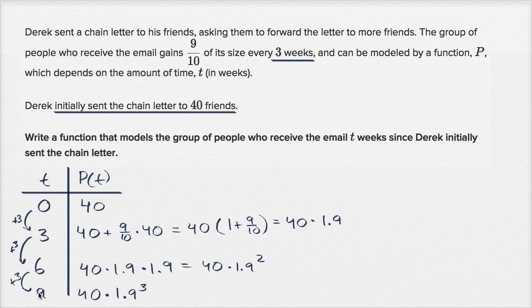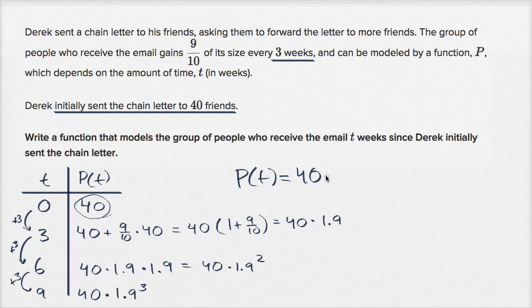And so what's going on over here? Well, we can see it's an exponential function. We have our initial value, and every three weeks we're multiplying by 1.9. So 1.9 would be our common ratio. So we could say that p of t is equal to our initial value, 40, times our common ratio, 1.9.